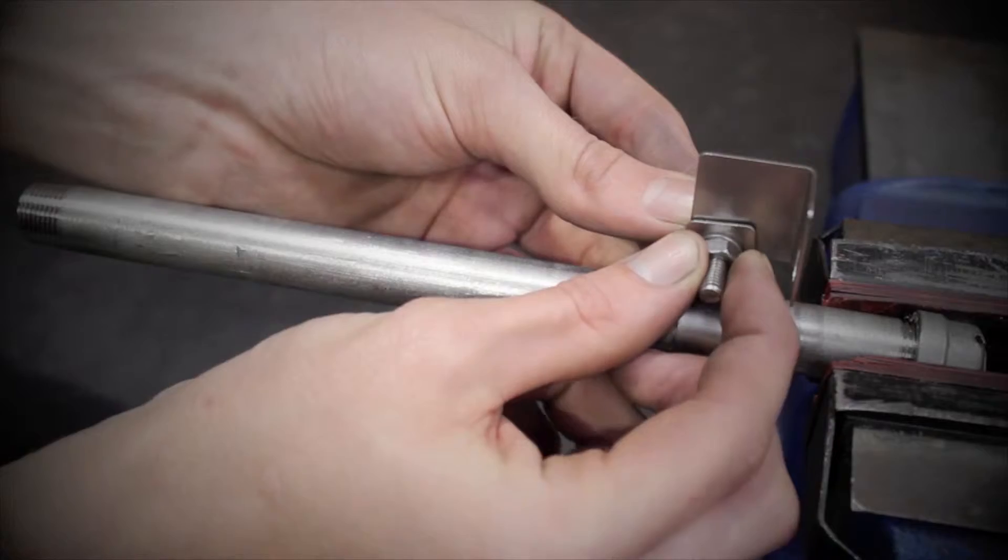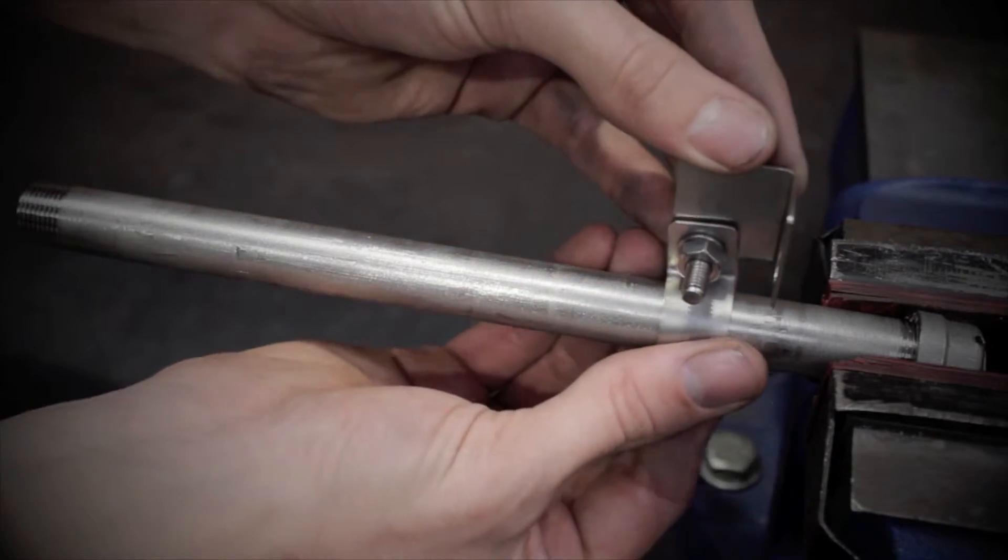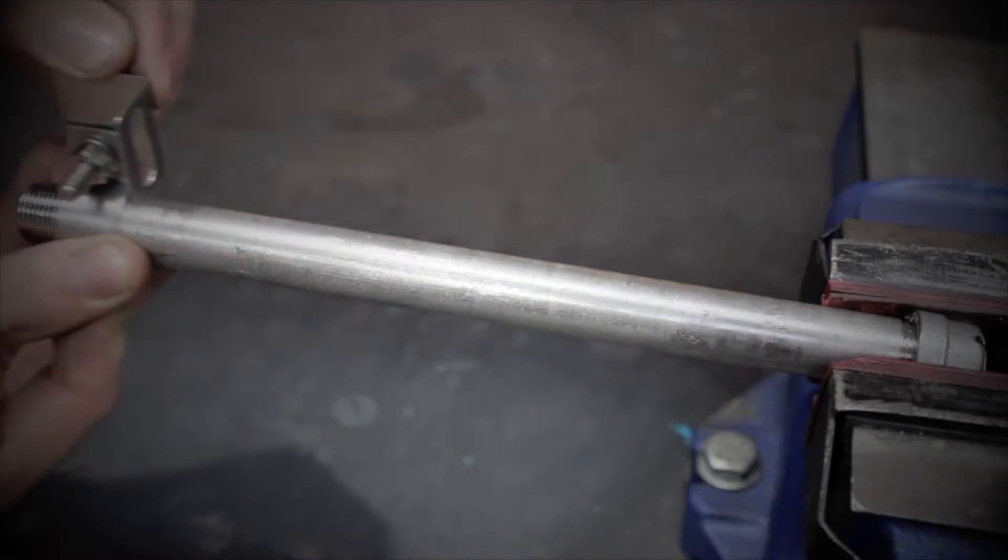Place the feed pipe in a vise and carefully remove the retaining bracket, then place this to one side.